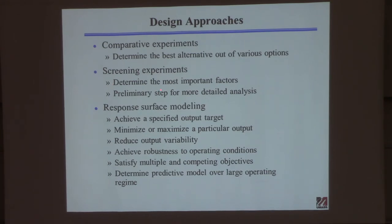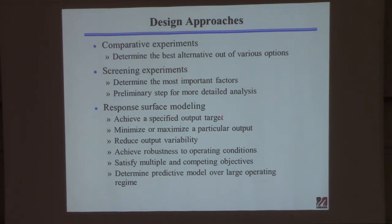Screening experiments are very useful for product adjustment. On the other end, response surface modeling — which we talked about last time — requires a lot of experiments but lets you ask: if I want the output to have a specified value, what combination of inputs gives it to me? Once you have a regression model, you can play around with input combinations to find the specifications you'd like, or minimize or maximize some output.